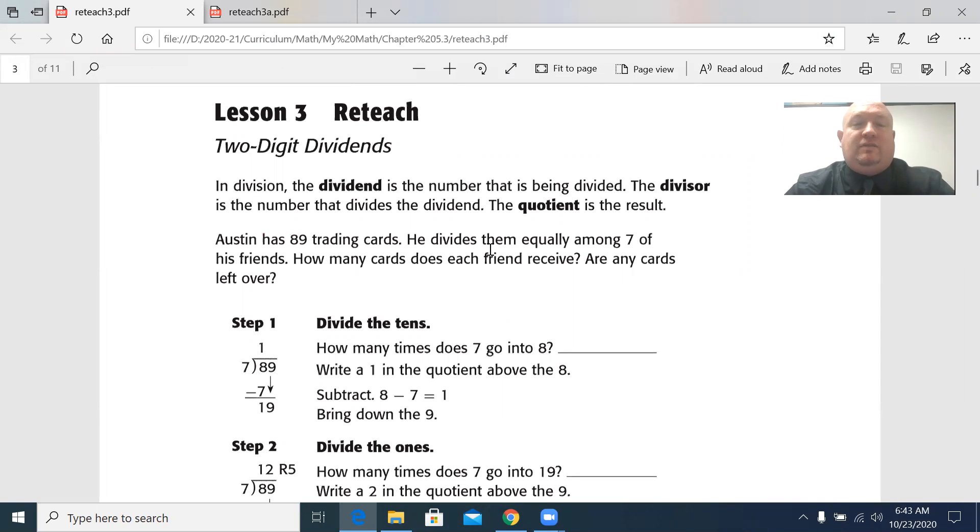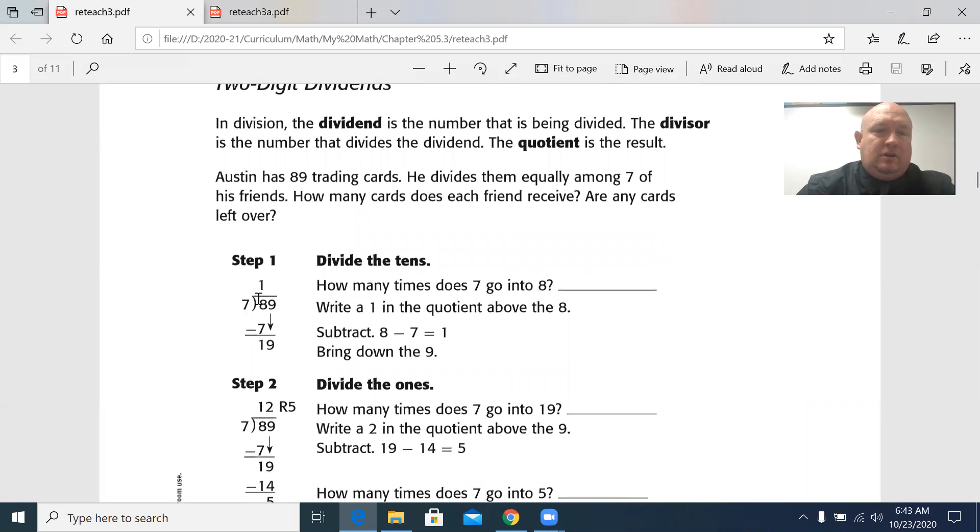In division, the dividend is the number that is being divided. So in this problem, seven and 89, 89 is the dividend. The divisor is the number that divides the dividend. That's the seven in this one. The quotient is the answer or the result.